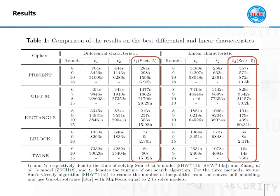This table summarizes the comparison of results on best differential and linear characteristics between two previous works and ours. We implement the three methods on PRESENT, and T1, T2, T3 respectively denote the resolution time of the three methods. From the table, we see that our search algorithm has an advantage over the two other methods when the number of rounds is large, and for each cipher, we cover more rounds with less time.